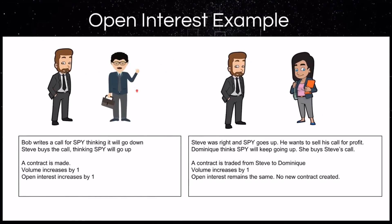Here's an example. We've got Bob and Steve. Bob writes a call for SPY — he thinks SPY is going to go down, writes a call and is looking to collect the premium from that contract creation. Steve buys this call because he thinks SPY is going to go up. So a contract has been made: Bob created it, Steve purchased it. The volume increases by one and the open interest increases by one.